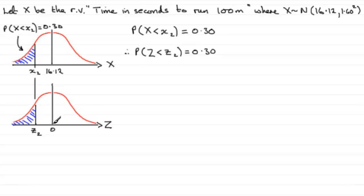Now we know that Z2 is given by the corresponding observed value, X2 minus the mean, which is 16.12, and divide that by the standard deviation, sigma, 1.60.